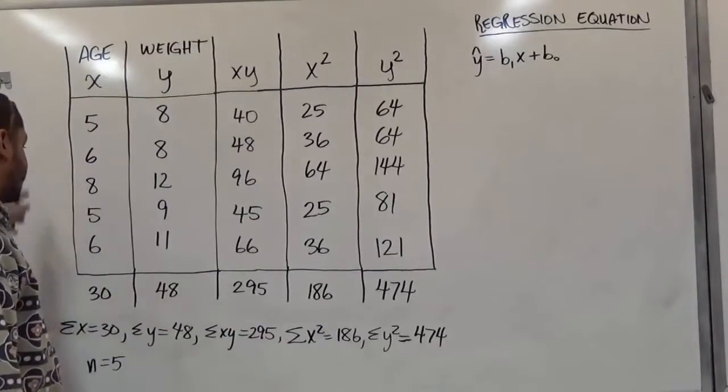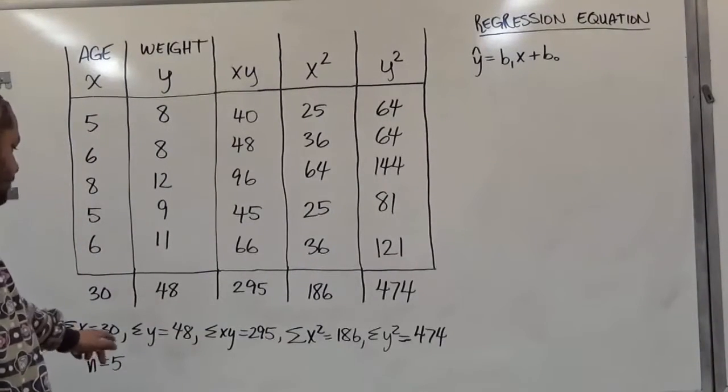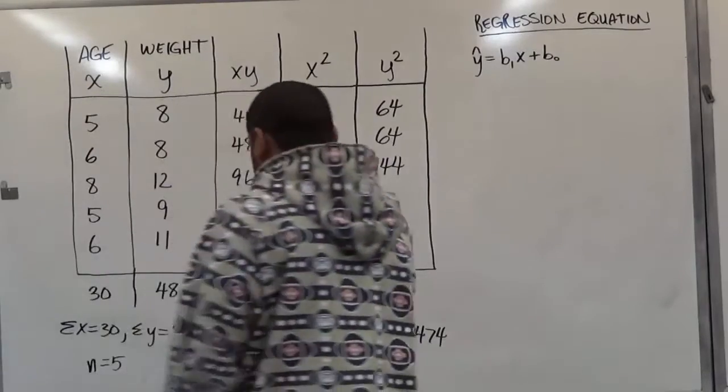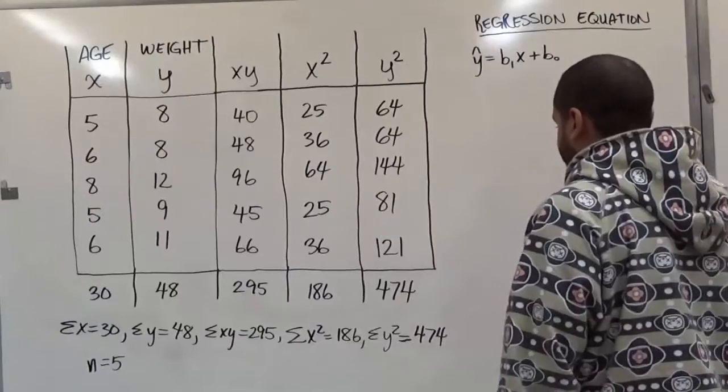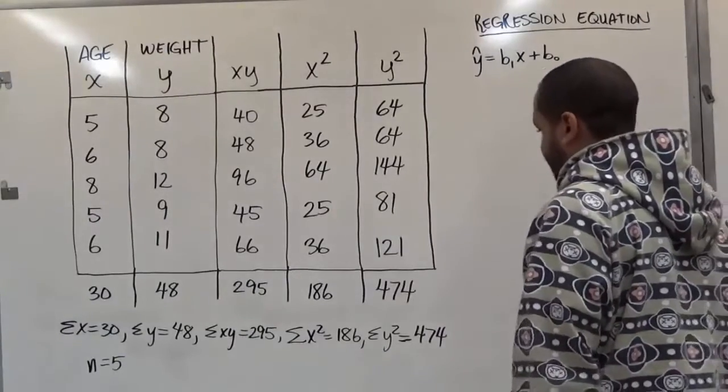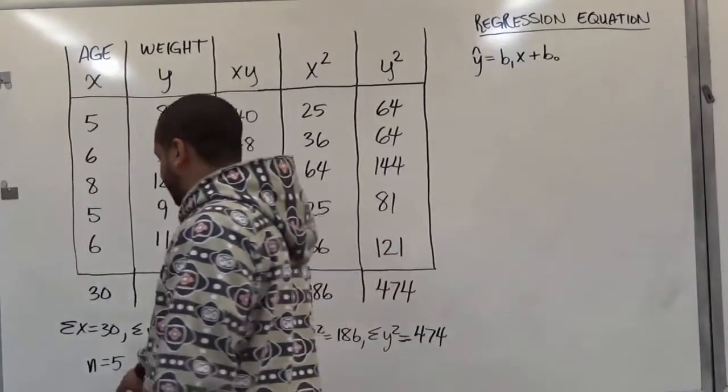Last time we had all these data values with the sum of x being 30, the sum of y being 48, the sum of x times y being 295, the sum of x squared 186, and the sum of y squared at 474, while our n equals 5.